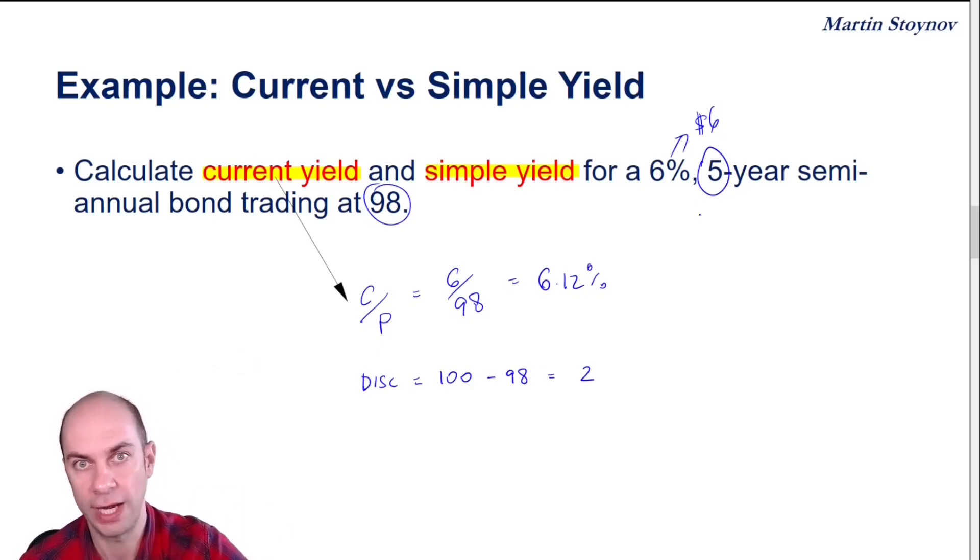So I want to straight line this over five years. So the amortization will be the discount over the number of years remaining. The discount is two, the number of years remaining are five. So I'm going to be taking $0.40 per annum.